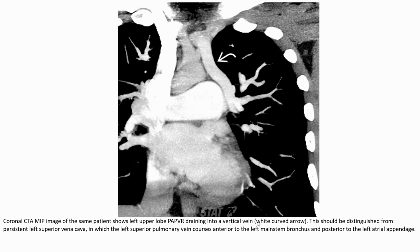Coronal MIP image of the patient shows left upper lobe PAPVR draining into the vertical vein. This should be distinguished from persistent left superior vena cava, in which the left superior pulmonary vein crosses anterior to the left main stem bronchus and posterior to the left atrial appendage.